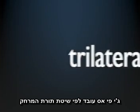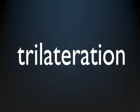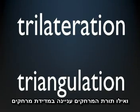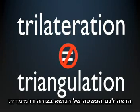GPS uses a method called trilateration. It seems to be widely confused with triangulation, but triangulation requires measuring angles, while trilateration is based upon measuring distances. I'll show you this using a simplified two-dimensional visualization.